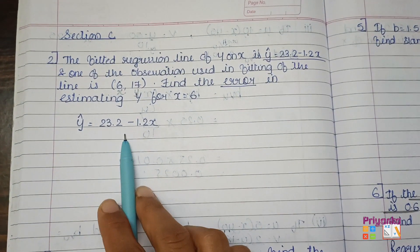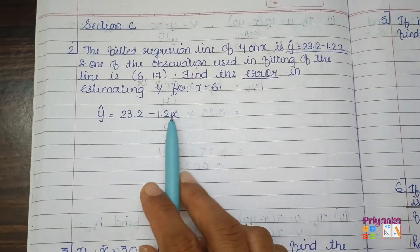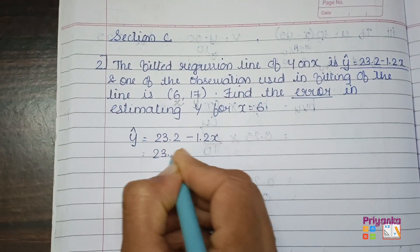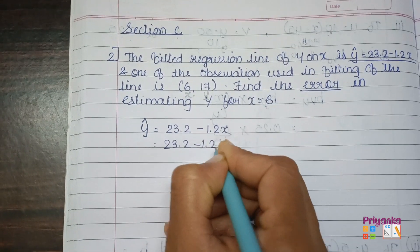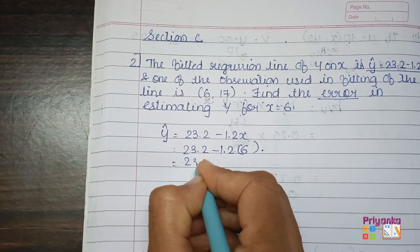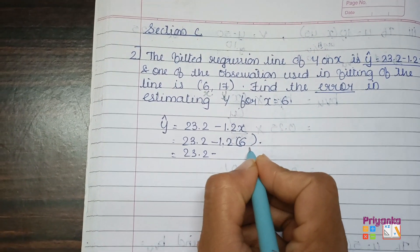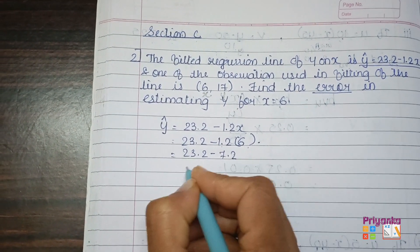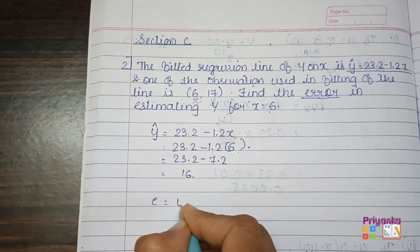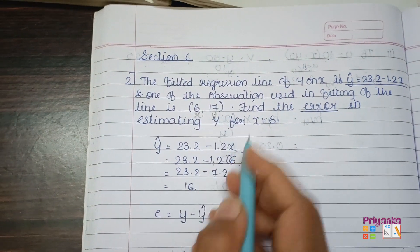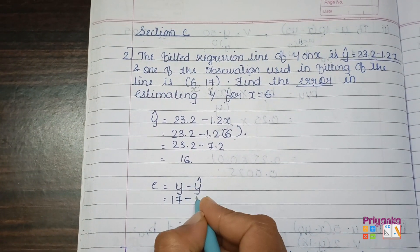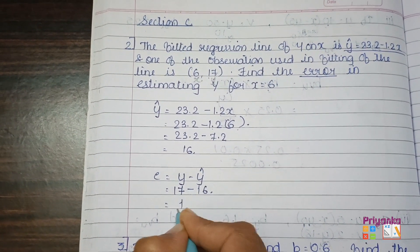Take the regression line given in the question and substitute x equal to 6. So 23.2 minus 1.2 multiplied by 6 gives 7.2, and the answer is y-cap equal to 16. The error is equal to y minus y-cap. The observed y is 17 and y-cap is 16, so the error is 1.